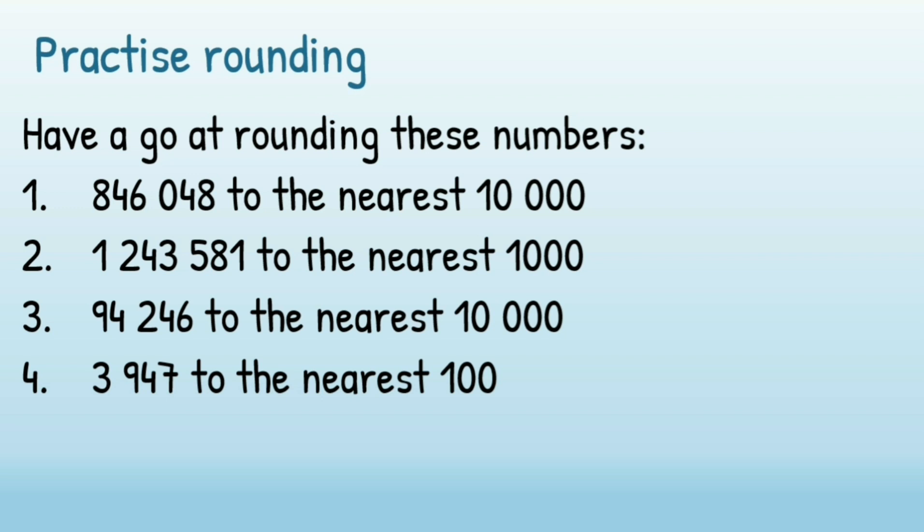The fourth one, you're rounding 3,947 to the nearest 100. And the last one, you're rounding 143,800 to the nearest 100,000.